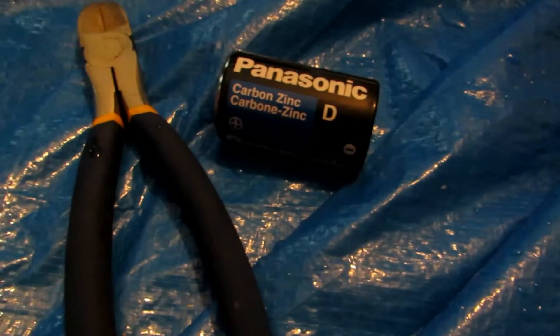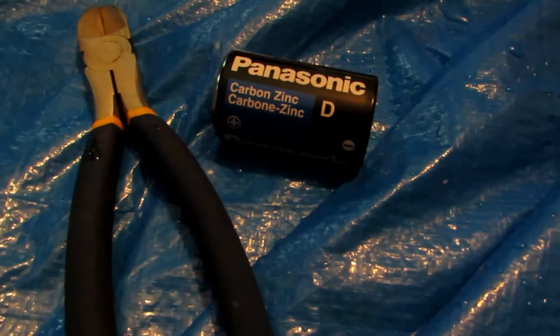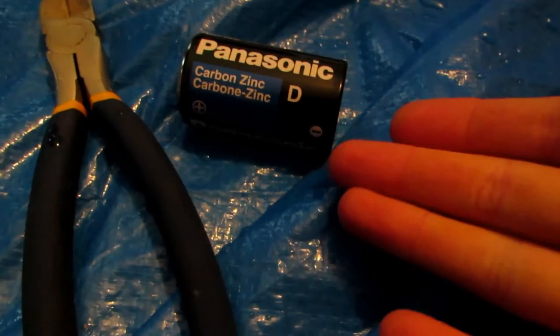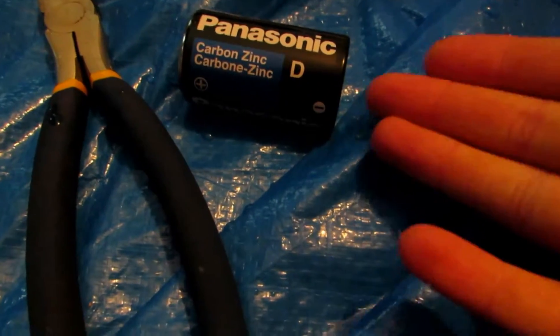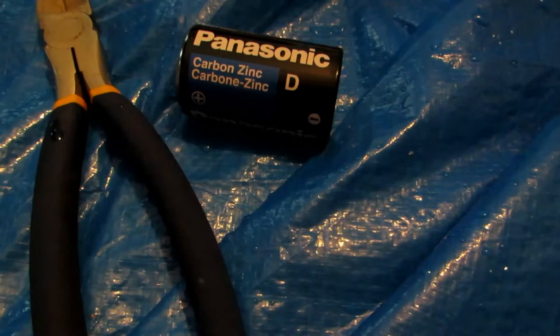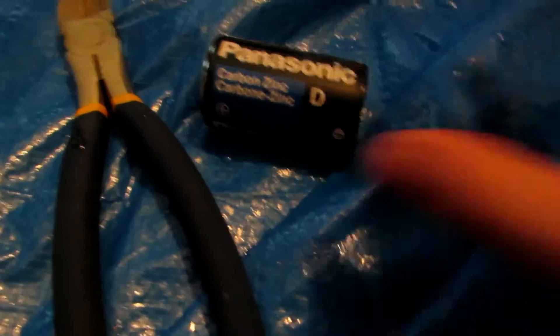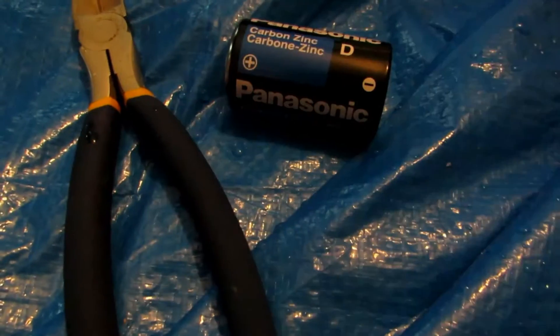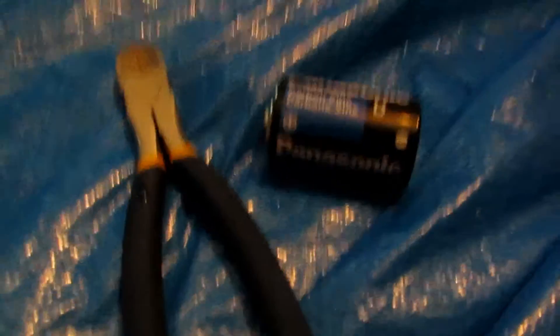Other batteries that you could use are lantern batteries or any other type of battery that says carbon zinc. Some 9 volt batteries also contain carbon zinc batteries in them. So with this, we're basically just going to peel off the casing. So I'll be back once I peeled off the casing.